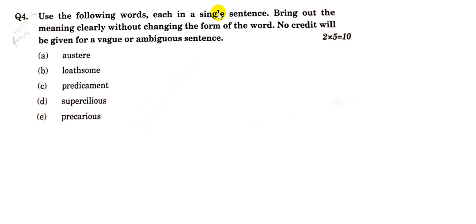The first word is Austere. Now Austere means someone who leads a very strict and disciplined life.